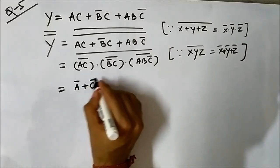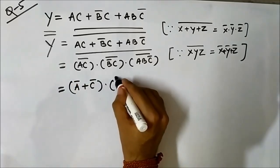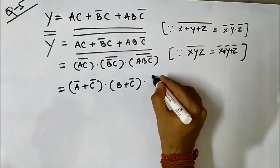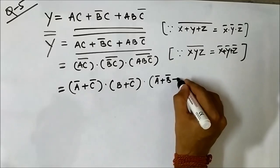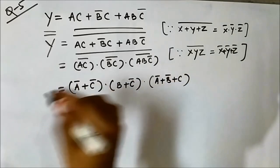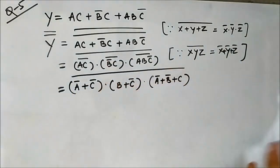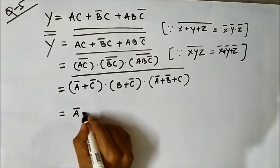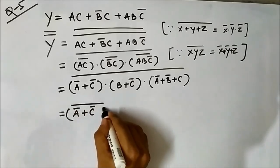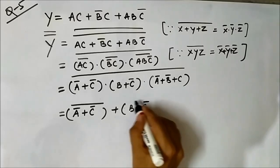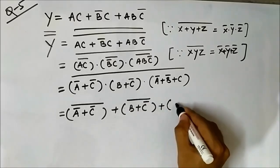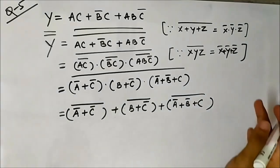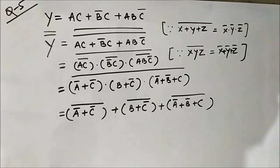It becomes A' + C', then B double complement + C' — and since double complement of something returns the same value — and A' + B' + C double complement. Double complements are removed, giving us the modified Boolean expression with the whole complement remaining.